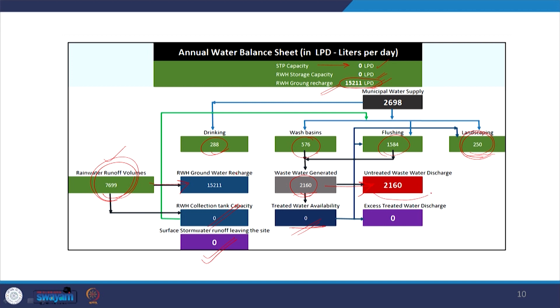From wash basins and flushing, the wastewater generated is the sum total of both. Without an STP — with STP capacity at 0 — no water is being treated, so all untreated wastewater is going into the municipal sewer. This untreated wastewater discharge is the problem area in this water balance diagram, and we need to solve it.